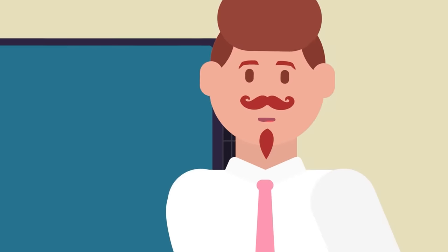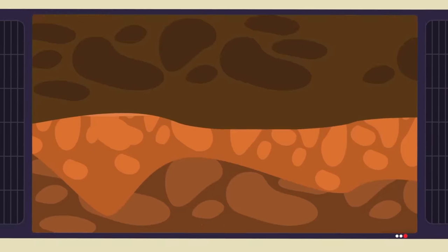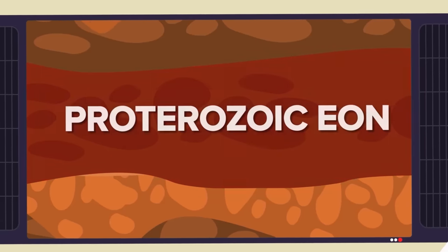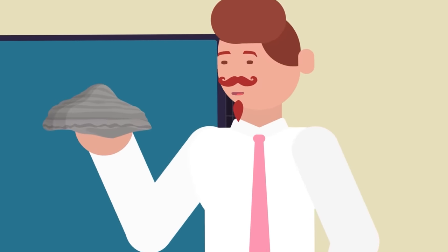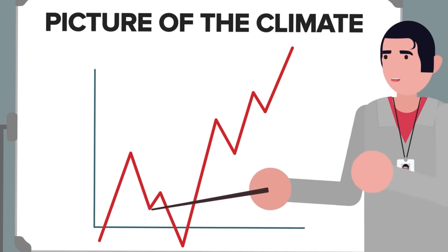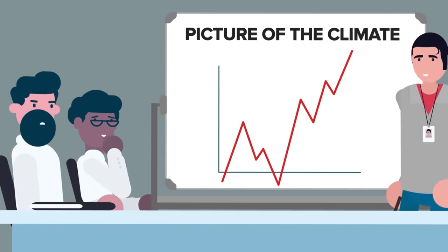This is the first era where we have actual extensive records of the Eon, as the Archean Eon left most of its fossils in the deep water. However, during the Proterozoic Eon, rock deposits were formed in shallower areas, and many remain almost intact from that era. Scientists have been able to develop a full picture of the climate during that time, and one thing that is clear is that during certain periods, it was brutal.